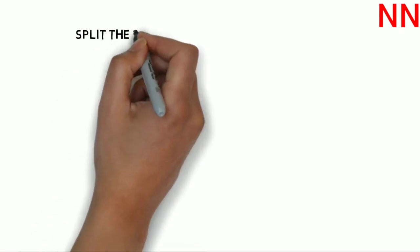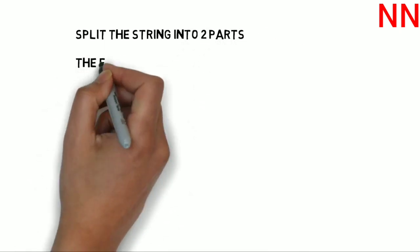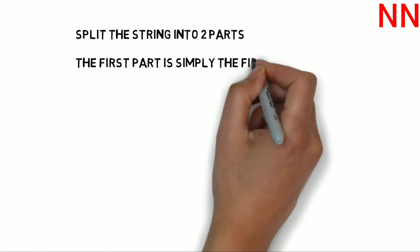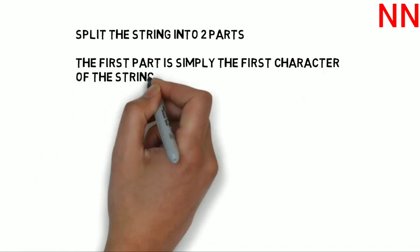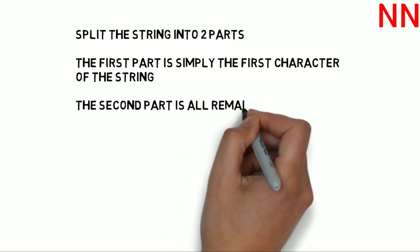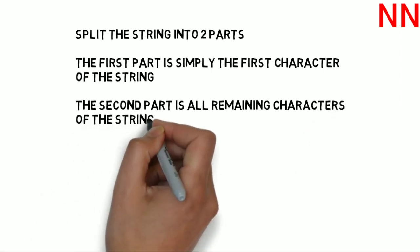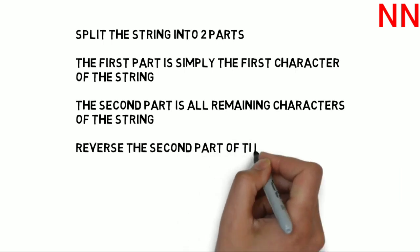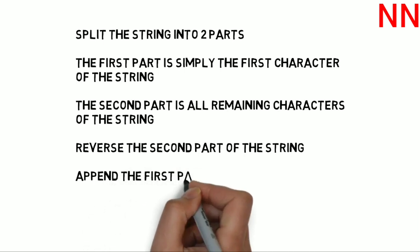Let's see another solution to this problem. What we can do is, when we first receive the input string, split the string into two parts — not equal parts. The first part is simply the first character of the string, and the second part is all the remaining characters. Then we reverse the second part of the string, and once it's reversed, we simply take the first part and append it to the end of the reversed part.